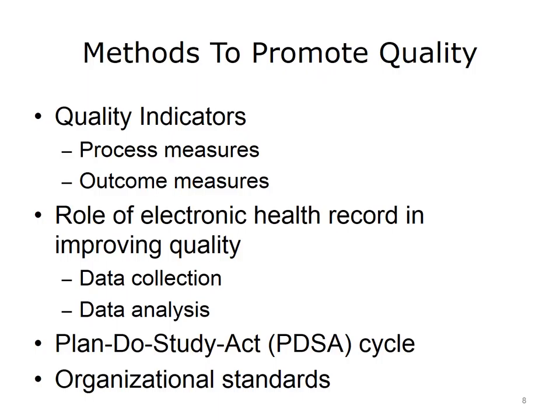Quality indicators may describe processes — for example, percent of patients prescribed aspirin at hospital discharge after myocardial infarction — or outcomes, for example, in-hospital mortality rate for patients admitted for myocardial infarction. The electronic health record is important in improving quality, not just acting as a vehicle for data collection, but also providing the data required for analysis in a sophisticated fashion.